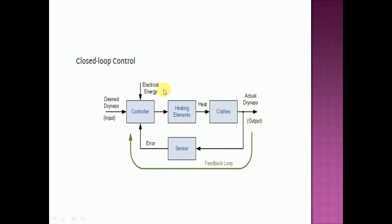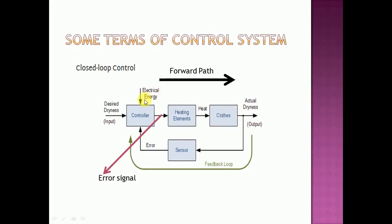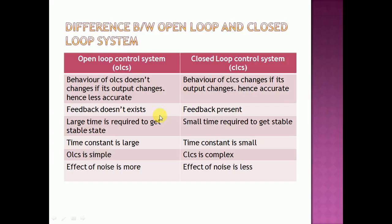Now, some terminologies of the control system: this path is called the forward path, this part is known as the feedback path or feedback loop, and the difference between the desired result and the actual output is equal to the error signal.